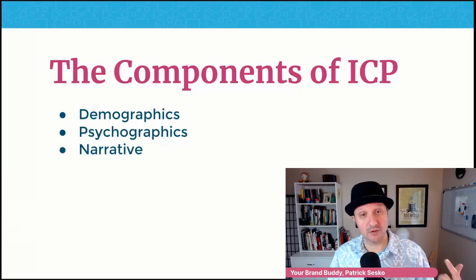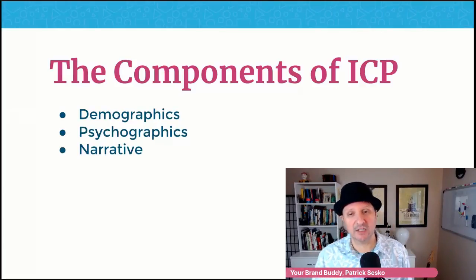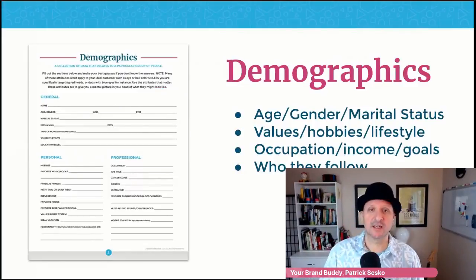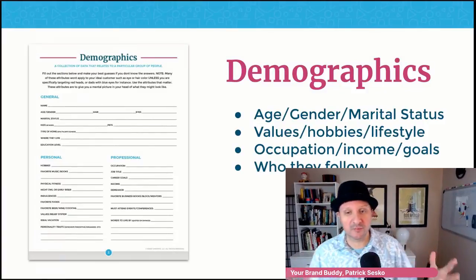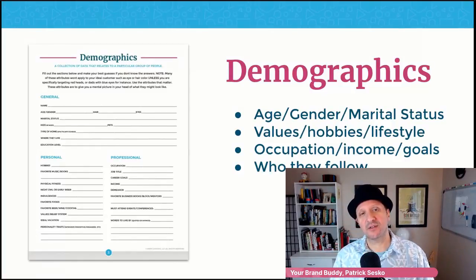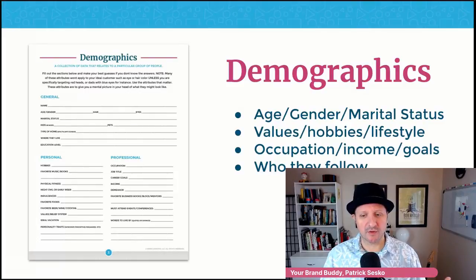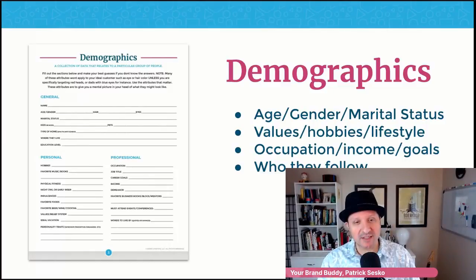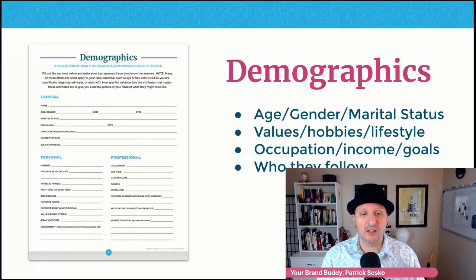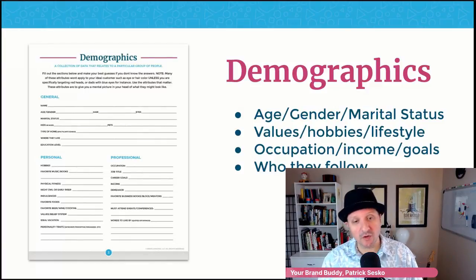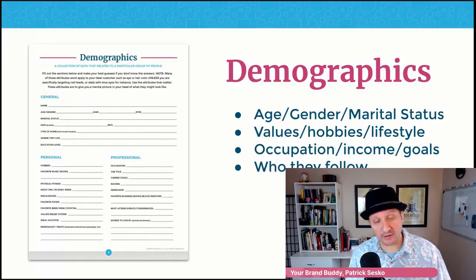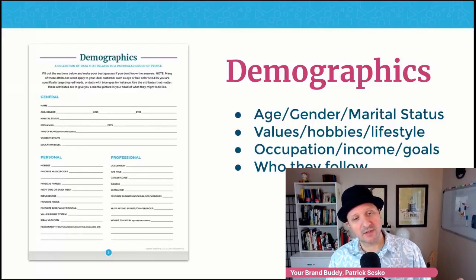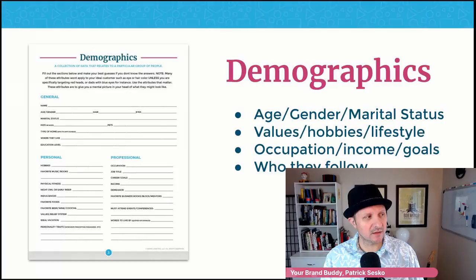The components of your ideal customer profile are three things: your demographics, your psychographics, and a narrative. First up is demographics. The dictionary defines it as the statistical data relating to the population of particular groups of people — that's a fancy way of saying these are the harder facts like their age, gender, marital status, values and hobbies, lifestyle, occupation, income, goals, and who they follow as it relates to your product or service.